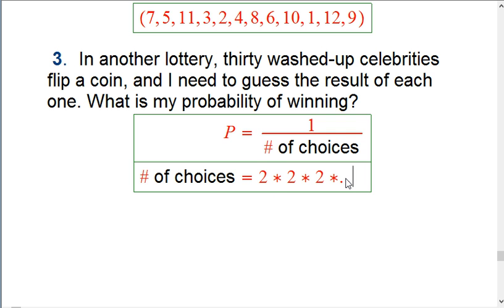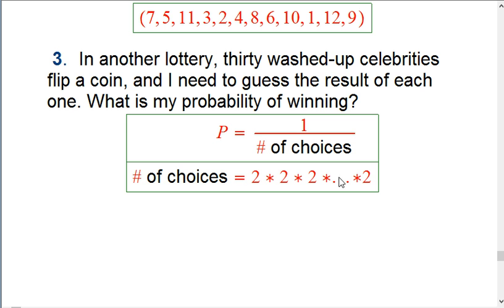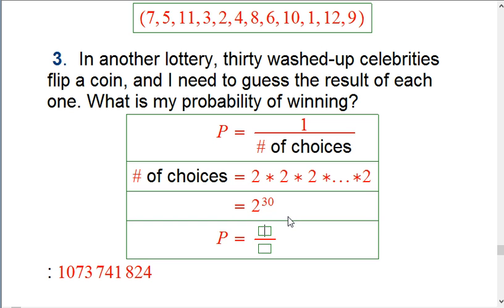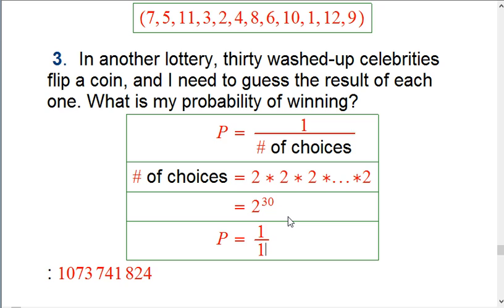And so that's going to be two to the 30th. What is that? That's big. It's about a billion. So here the probability of winning is about one over one billion. Not very good chances.